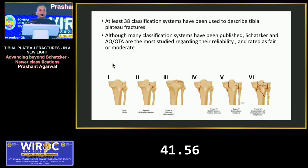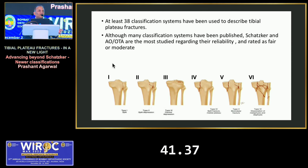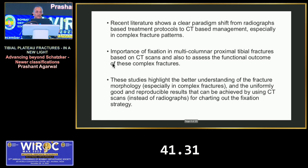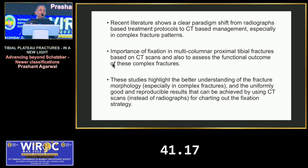The old standard Schatzker classification — types 1, 2 and 3 — basically involves the lateral tibial condyle; type 4 is the medial condyle; and types 5 and 6 are bicondylar fractures. This classification is based mainly on two-dimensional imaging where AP and lateral views are taken. A 3D CT scan or a 2D CT scan gives you more information about the anatomy of the fracture and a better view of the posterior condyle.